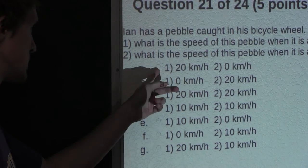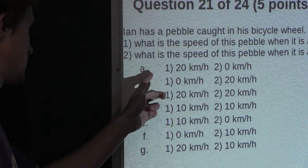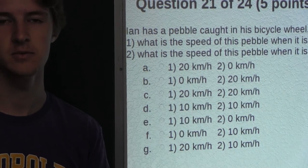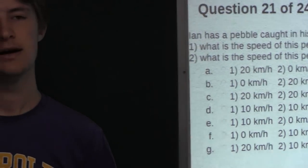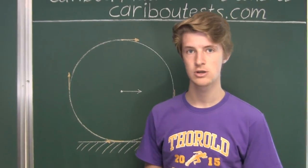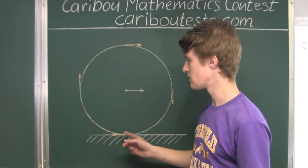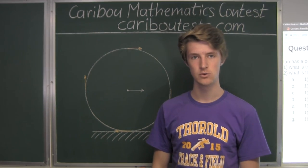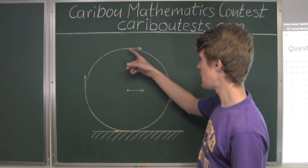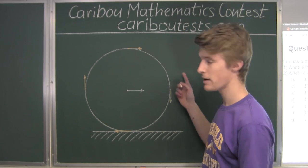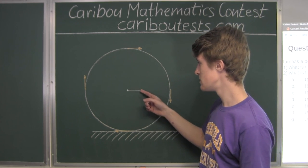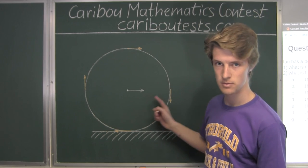Looking through the options, the correct answer is option A: 20 kilometers per hour for the top, and zero kilometers per hour for the bottom. The key to solving this problem is realizing that the complicated motion of the pebble in relation to the ground is actually the sum of two simple motions — the pebble's circular motion in relation to the bike frame, and the bike frame's uniform motion in relation to the ground.